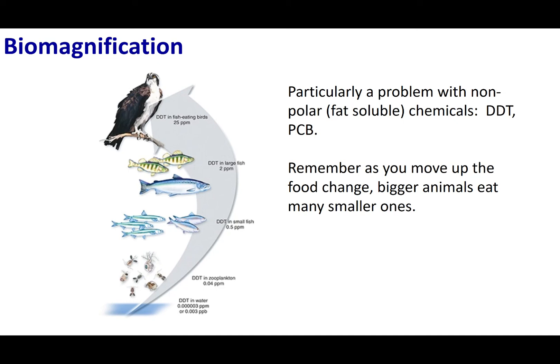Another important topic is the environmental impact of solubility. Let's look at the classic case of DDT, a pesticide used to help agriculture flourish. DDT is fat soluble. They spread DDT into the environment across crops, and since it's a spray, the concentration was very low — about 0.003 parts per billion. People thought this small amount of chemical would do no harm.